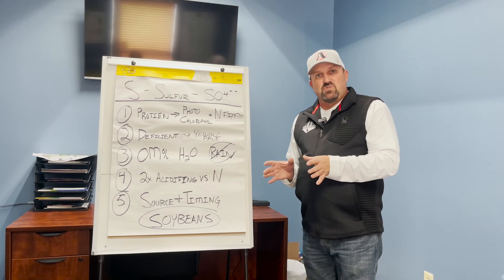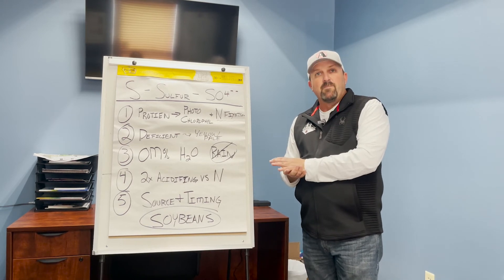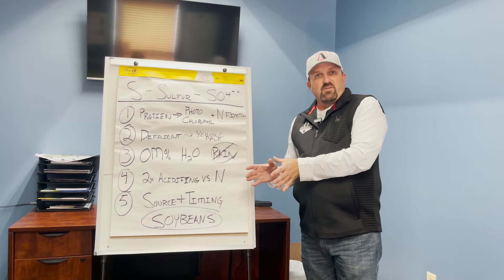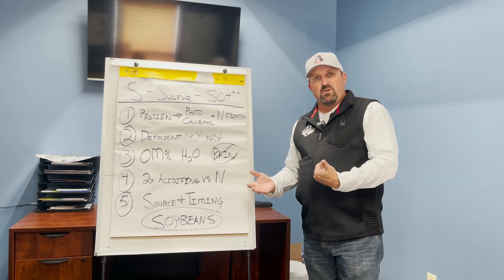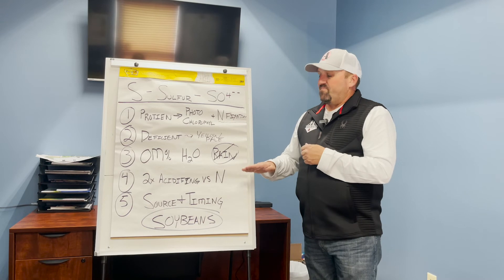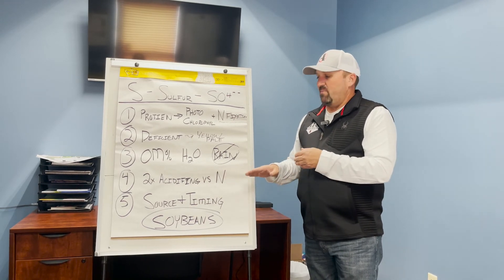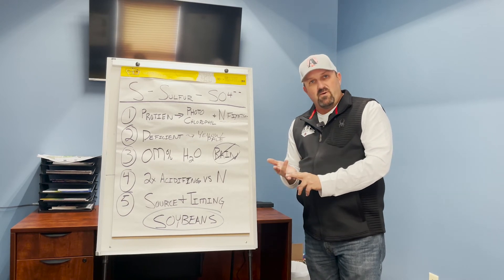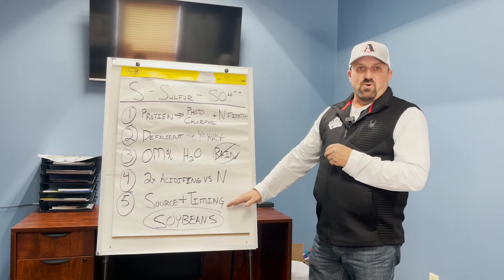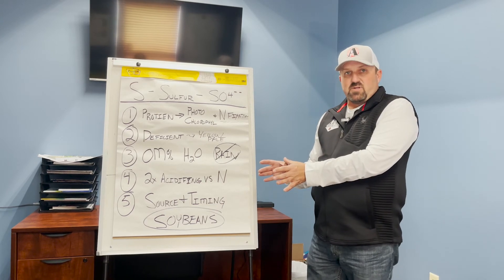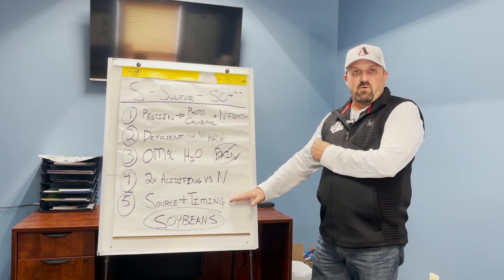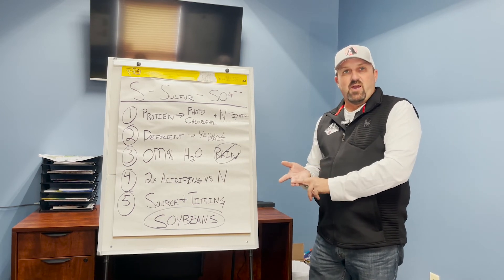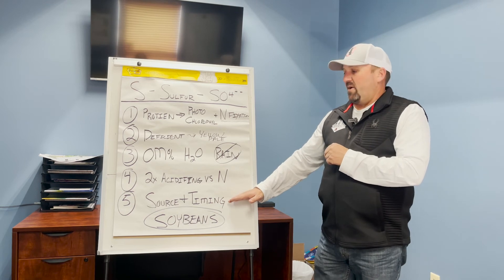Understand your sulfur source and timing. A dry 90% sulfur product applied in the fall has a very slow release and is slow to become available, which can be appropriate. In contrast, available forms like AMS or thiosol are readily soluble. For fertigation or in-season applications, you want that available form — a UAN sulfur mix or AMS — so it gets into the plant quickly.